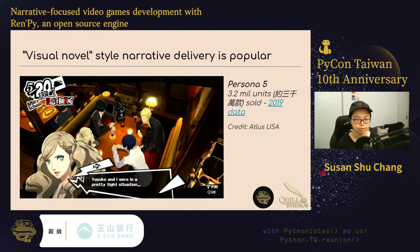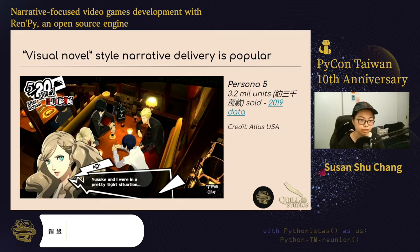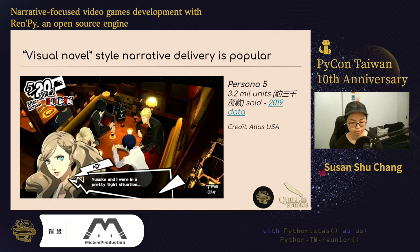然后其实蛮多就是阅读这些剧情、阅读这些对话。比较现代的例子是 Persona 5，很多很多人玩，大概到 2019 年的数据是卖了大概 3000 万款，然后每一款大概是 60 到 80 元美金，大概是 2000 多到 3000 多台币每一款。